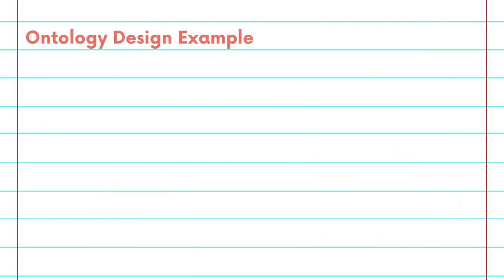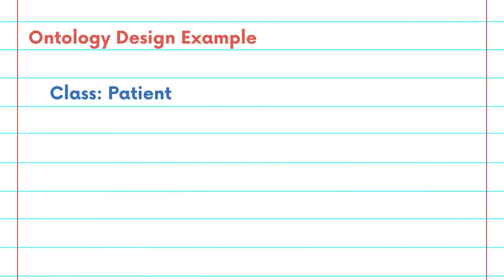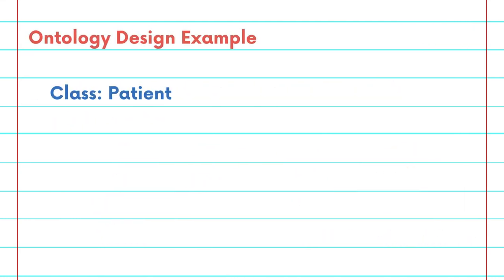Let's look at a quick example. Within the class patient, there is an instance of John Doe. John Doe has properties such as patient ID, name, date of birth, condition, and more.